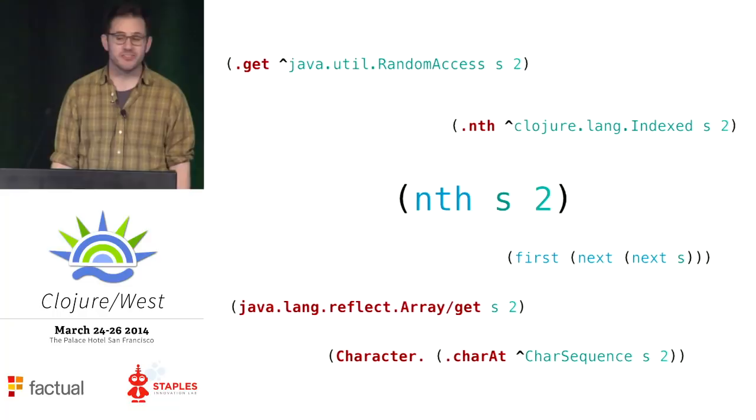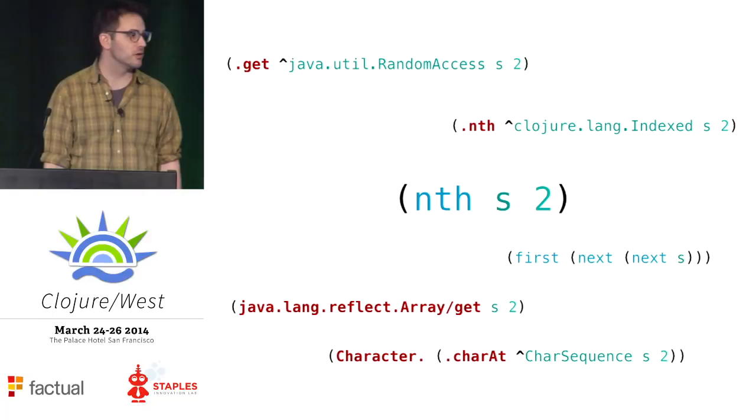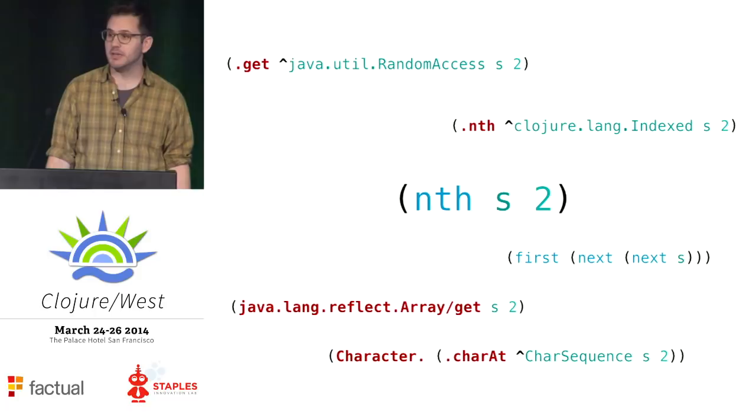But if it's none of these things — if it's just a seq — then we call next, and then next, and then first. This can basically mean anything, because if it's a lazy sequence, we might be doing arbitrary computation. This might be as simple as walking a linked list, or it might mean we're traveling to the moon and back again. And so we don't know what happens when we call nth. We only know what it returns.